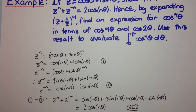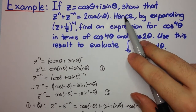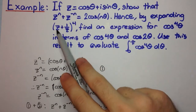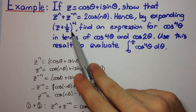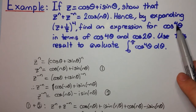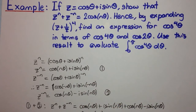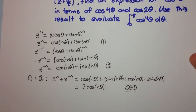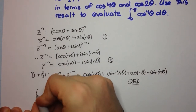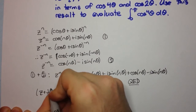Now let's look at the next part. 'Hence' tells us we're going to use this result. By expanding (z + 1/z)^4, find an expression for cos^4θ in terms of cos 4θ and cos 2θ. Let's look at the expansion of (z + 1/z)^4.